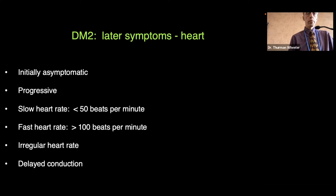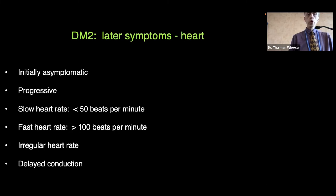Later symptoms of DM2 include the heart. Initially the heart involvement is asymptomatic, but can be progressive with age. Changes can include a slowed heart rate of less than 50 beats per minute, a fast heart rate of more than 100 beats per minute, an irregular heart rate, or delayed conduction — a kind of inefficient beating of the heart.